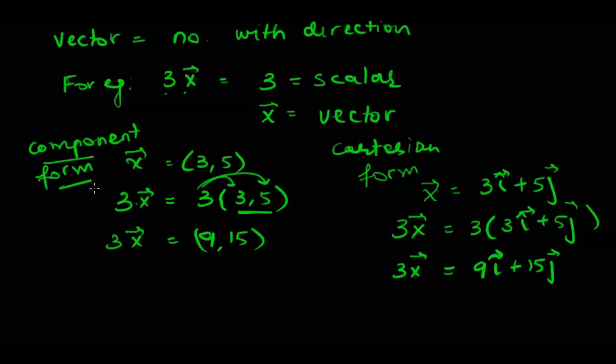So be the question given in component form or in Cartesian form, we follow the same steps. We are actually doing distributive property. So here also we are multiplying 3 with 3, 3 with 5 and we are doing distributive property.